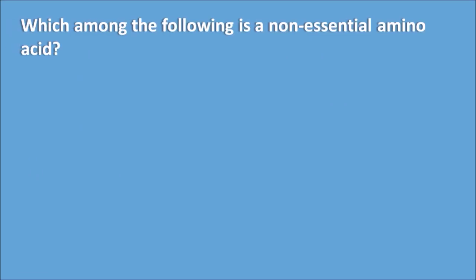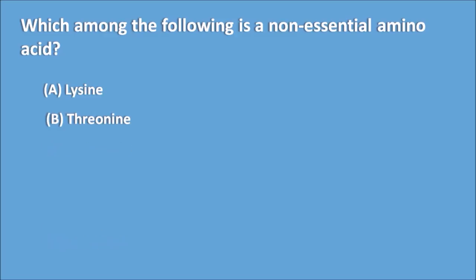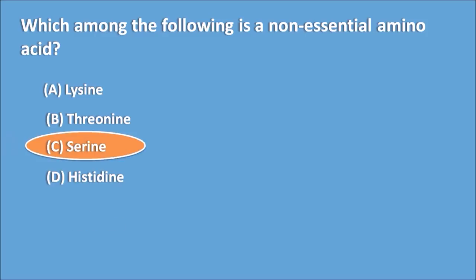Which among the following is a non-essential amino acid? Options: A. Lysine, B. Threonine, C. Serine, D. Histidine. The right answer is Serine — it is a non-essential amino acid.